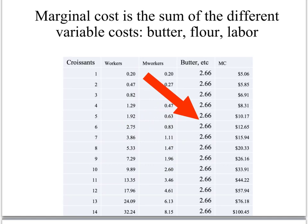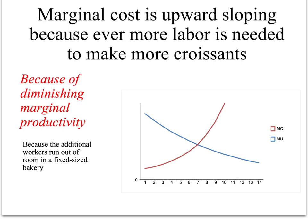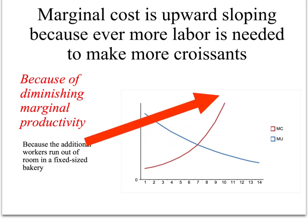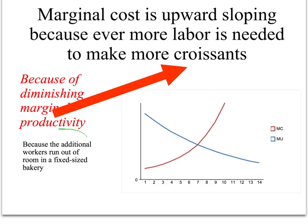The extra croissants are more and more expensive because you need more and more labor. You're putting in the same amount of flour and butter, but you need more and more labor for the croissants. And therefore, because of the greater labor you need, the supply curve of croissants is upward sloping. You will supply more croissants only at higher prices because of diminishing marginal productivity in making croissants. Your marginal productivity diminishes because the additional workers run out of room in a fixed-sized bakery. Therefore, you need more and more workers to get the same increase in output. Diminishing marginal productivity leads to rising marginal costs, and that gives you your upward sloping supply curve.